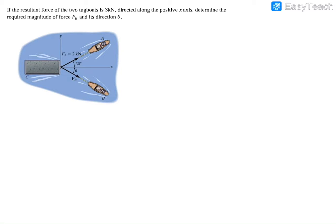So we're told that the resultant force of these two boats is actually equal to three kilonewtons, and it's directly across the x-axis, and we're going to be looking for FB as well as the angle theta.